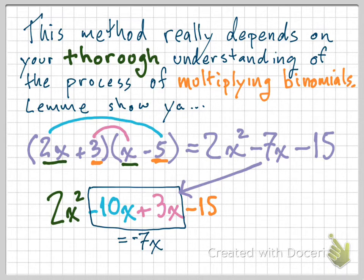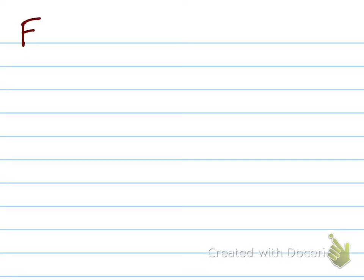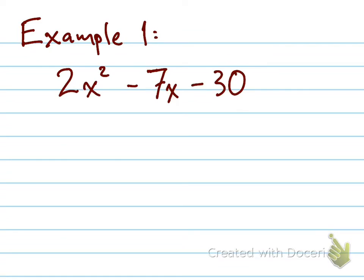Sometimes people do just call this method the reverse FOIL method. But geez, how boring is that? Anyway, let's try something else. Let's try an example. Let's say 2x squared minus 7x minus 30. So I'm going to set up a couple of parentheses there, assuming that it can be factored. Isn't that optimistic and hopeful?